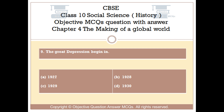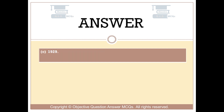Question number 9. The Great Depression began in: Option A: 1927. Option B: 1928. Option C: 1929. Option D: 1930. The right answer is Option C: 1929.